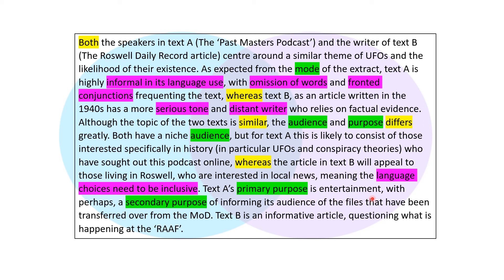'Text A's primary purpose is entertainment, with perhaps a secondary purpose of informing its audience of the files that have been transferred over from the MOD. Text B is an informative article questioning what is happening at the RAAF.' From focusing my introduction around those four things — mode, audience, purpose and subject — I'm showing to any examiner that I understand these texts and why they've used language in the way they have, which is ultimately what they want to see from any English language student. I've also shown I understand this is a comparison question and I'm going to talk about the two texts together, rather than talking all about Text A and then all about Text B as two separate things. This is the structure that will work with whatever texts an exam board throws at you, and a nice easy way to start your analysis.